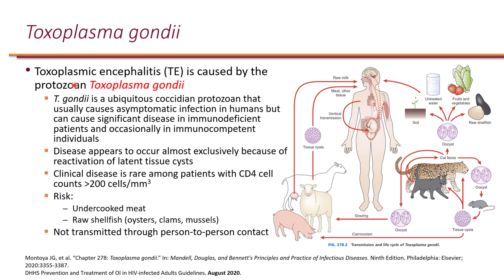Toxoplasmic encephalitis (TE) is caused by Toxoplasma gondii, a protozoan parasite. Cats and livestock are involved in the life cycle. Risk factors for infection include undercooked meat, raw shellfish (oysters, clams), exposed vegetables, untreated water, organic food, and gardening near cats or livestock. This is an opportunistic infection primarily affecting people with CD4 count less than 200.